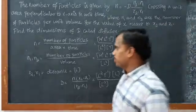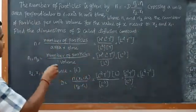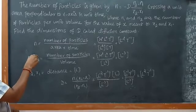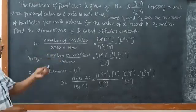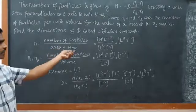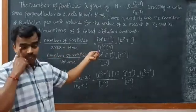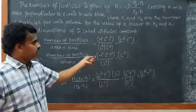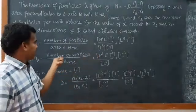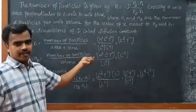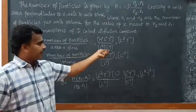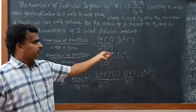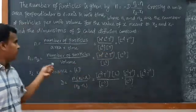Now we move on to find out the dimension for n. What is n? Number of particles divided by area and time. The particles we have mole, but we cannot write in dimension, so therefore it becomes zero. Area is meter square, so we write L to the power 2, and time is T. So we can write as L to the power minus 2, T to the power minus 1 for small n.